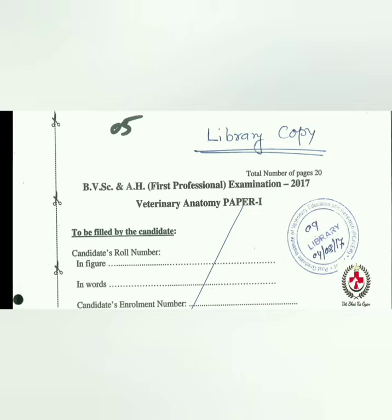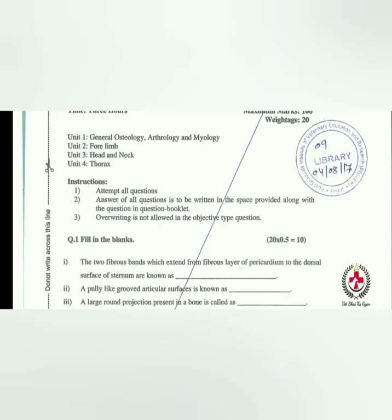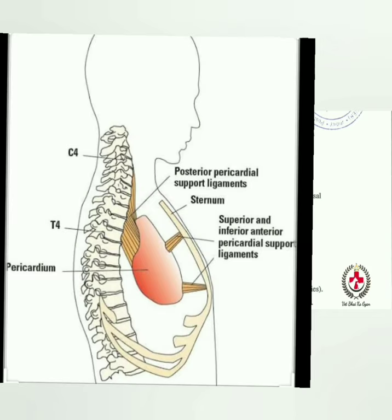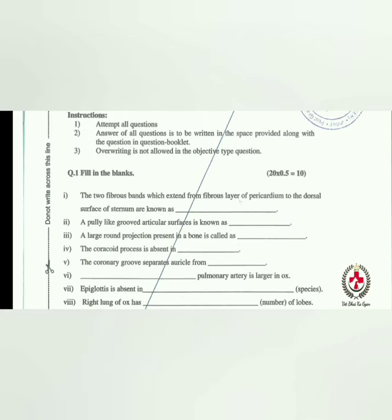We will start with fill in the blanks. The first blank: the two fibers which extend from the fibrous layer of pericardium to the dorsal surface of the sternum are known as the pericardio-sternal ligament.